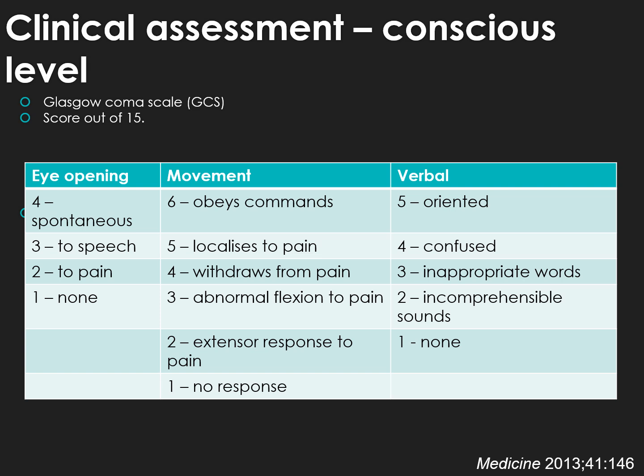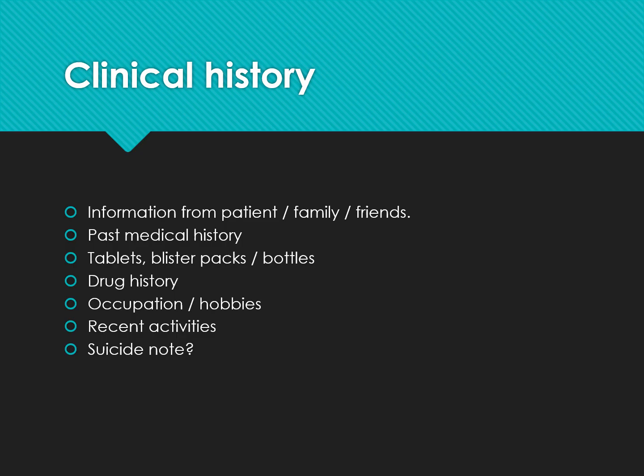The clinical assessment includes eye opening, movement, and verbal response. The scores range from spontaneous responses at the higher end down to number one, where there is no verbal response, no eye opening, and no motor response. Within movement, you can have responses to pain such as abnormal flexion. It's important to get a thorough clinical history.